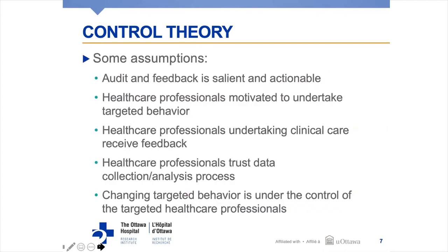This theory of audit and feedback makes some assumptions. The first is that the audit and feedback is salient and actionable — in other words, we're giving feedback on things that are important for the healthcare professionals. If we give feedback on things that aren't relevant to them, they'll ignore it. It also needs to be actionable — giving feedback on something someone can't change is just going to make them frustrated.